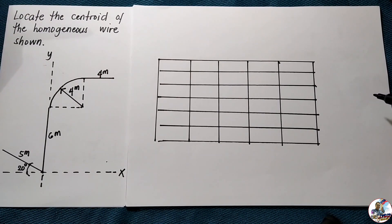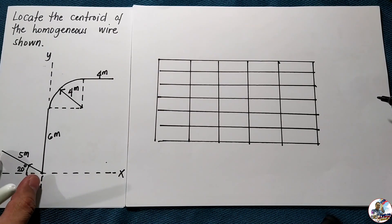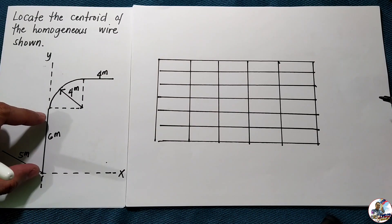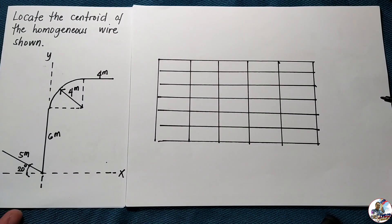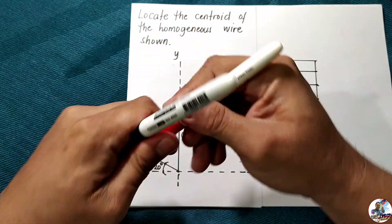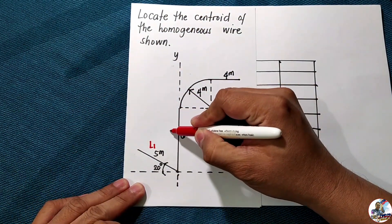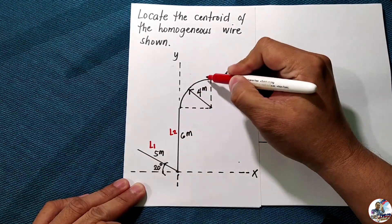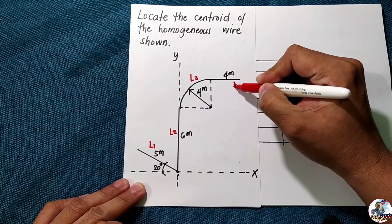Let's solve this problem: locate the centroid of the homogeneous wire shown. This is a composite figure with line segments of five meters, six meters, a segment of an arc, and four meters. We represent each as L1 for the five-meter line, L2, then L3 for the arc segment, and L4.